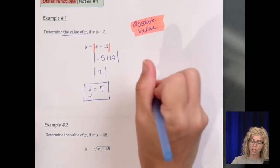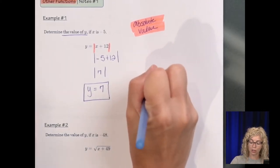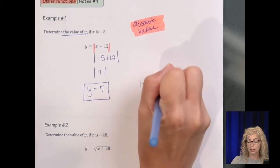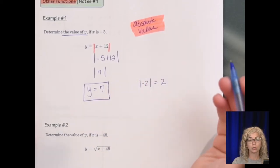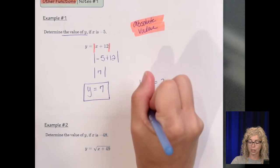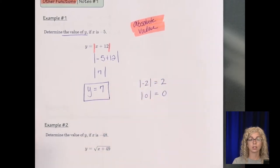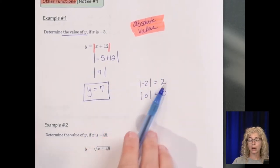On a side note, if we had the absolute value of negative 2, that would be equal to 2, as negative 2 is 2 units away from 0 on the number line. And the absolute value of 0 is 0. So we always end up with a positive result with absolute value.